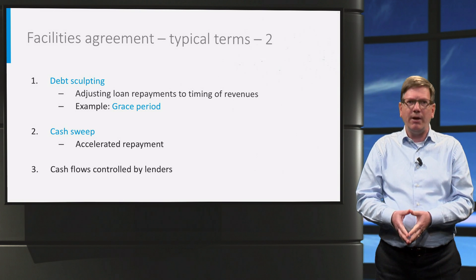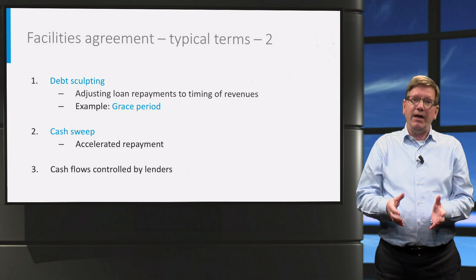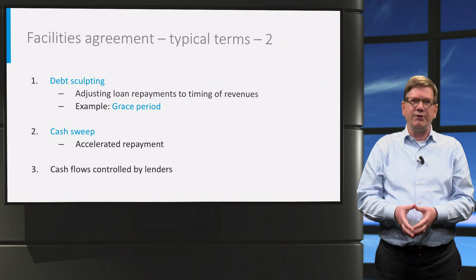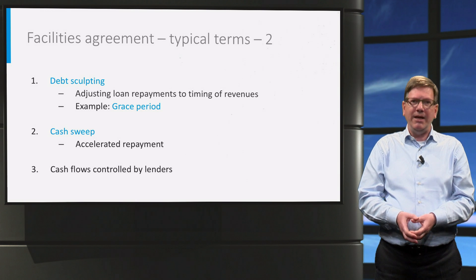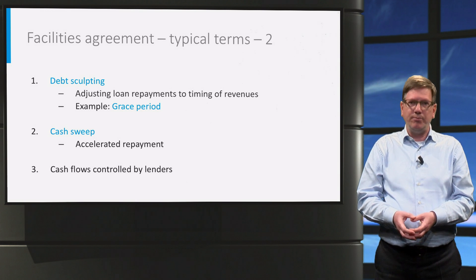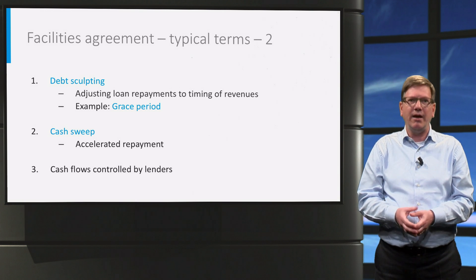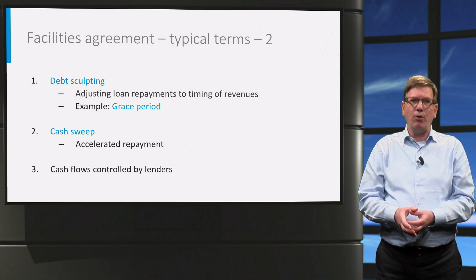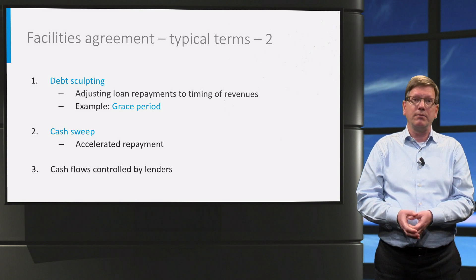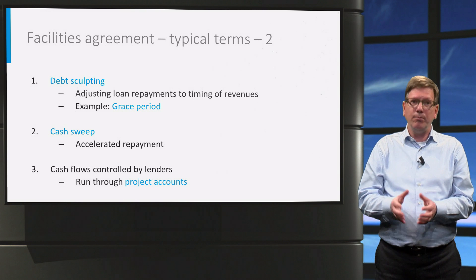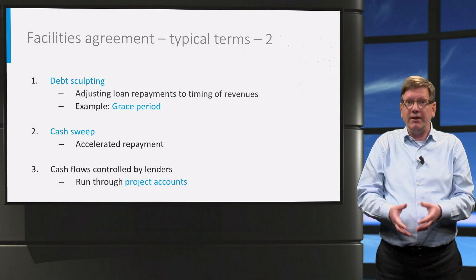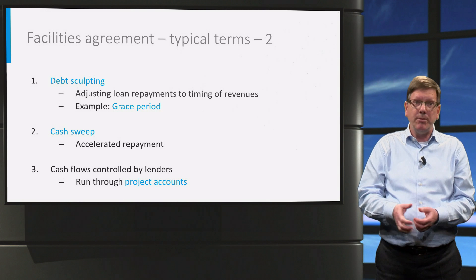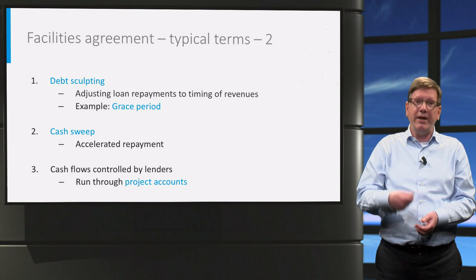A final specific feature is the settlement of the cash flows. In project finance, the lender does not want to leave it to chance that the project company will do the right thing and use the cash flow to repay the loans. Payments are highly scripted. The project company is required to open bank accounts at the lenders through which all cash flows — both in- and outflows — must run. These are called project accounts. The bank controls the in- and outflows and can monitor that everything is going according to plan. Requested payments, for example for settling an EPC or O&M invoice, must be documented by the closing contracts before they can be released by the bank.